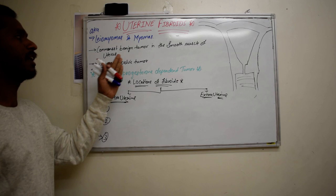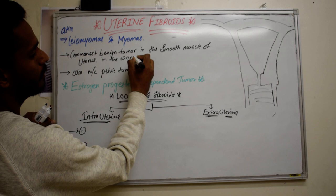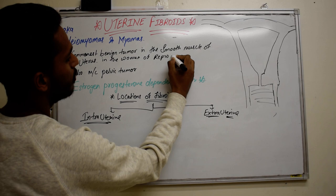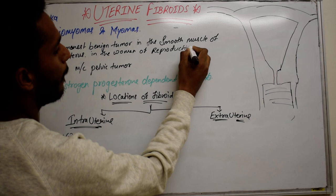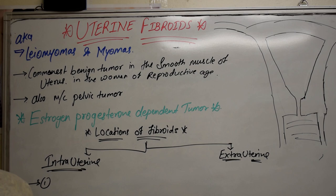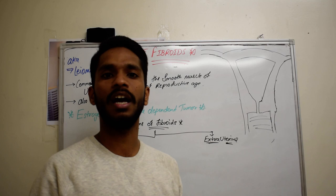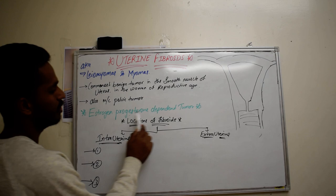We see this tumour mostly in women of reproductive age. Uterine fibroids are the commonest benign tumours in the smooth muscles of the uterus and also the most common pelvic tumour in females. The pathogenesis is not yet clear and is a debatable topic, but since fibroids regress after menopause and are rarely seen before menarche, we call it an estrogen-progesterone dependent tumour.